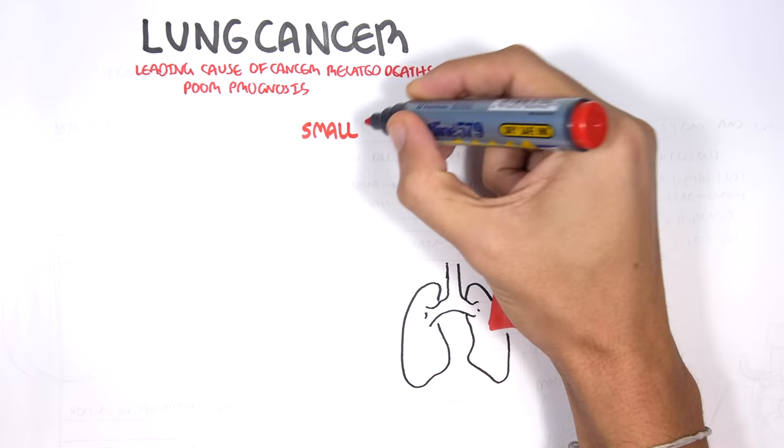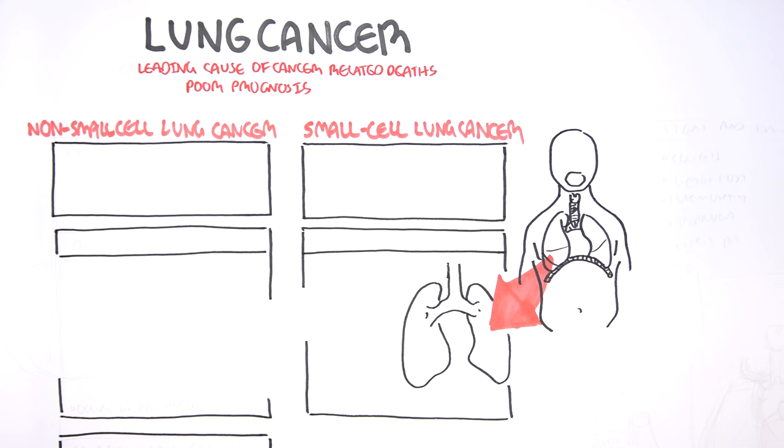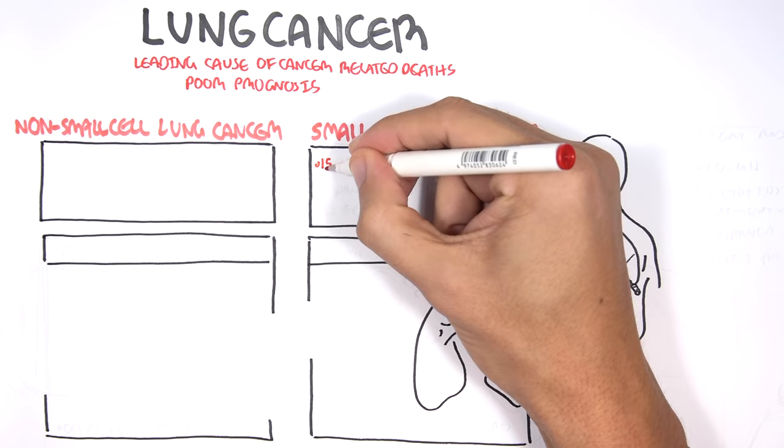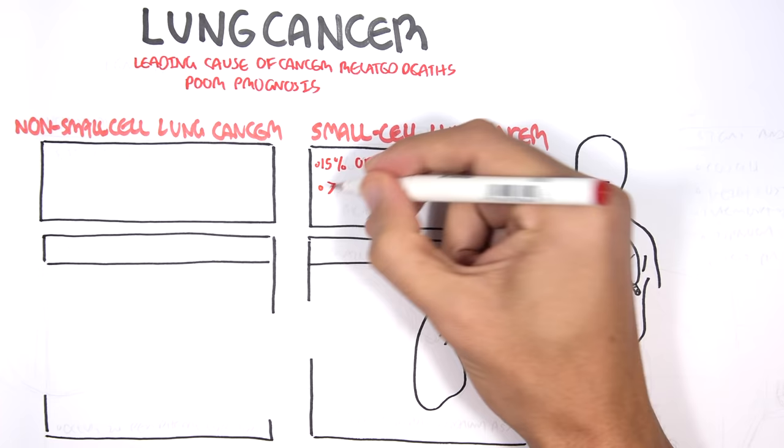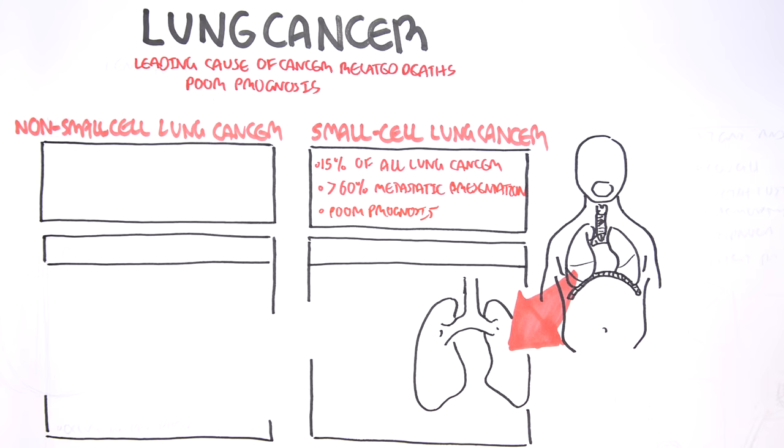Let us look at the different types of lung carcinomas. It can be divided into two broad types: small cell carcinoma and non-small cell carcinoma. Small cell carcinoma represents about 15% of lung carcinomas. More than 60% actually present already with metastases. The prognosis of small cell lung carcinoma is poor.